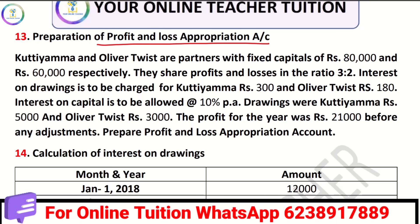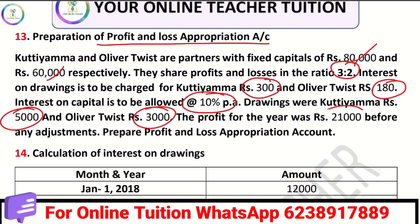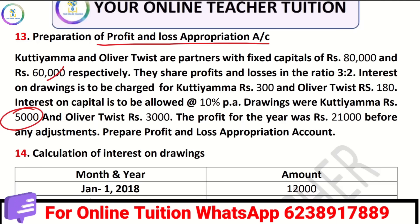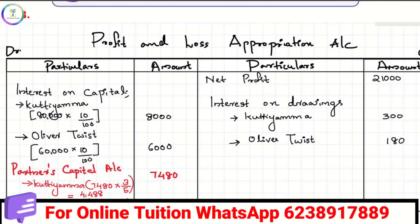Kutiyama and Oliver Twist are partners. Their capital is 80,000 and 60,000. Their profit sharing ratio is 3 to 2. Interest on drawings: Kutiyama made is 300, Oliver Twist is 180. Interest on capital is 10%. Kutiyama made is 5,000, Oliver Twist is 3,000, and profit is 21,000. These are all the details that we know. Please prepare a Profit and Loss Appropriation Account.